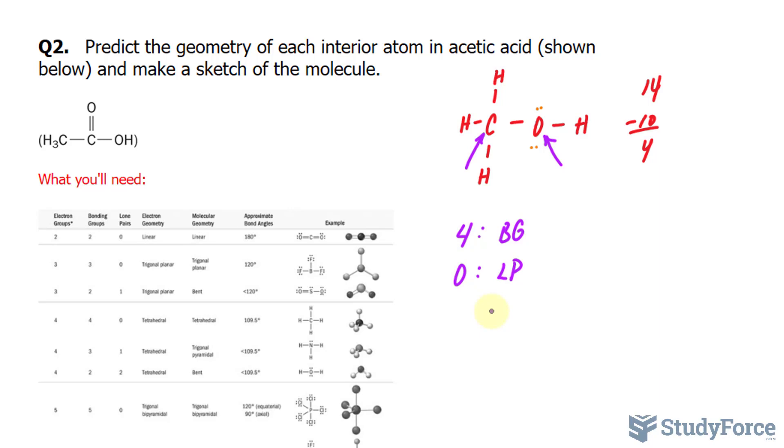And for oxygen, we have one, two, two bonding groups, and two lone pairs.